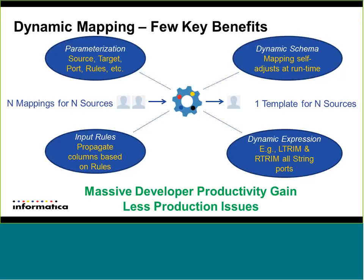Last but not least, we will also be able to parameterize the type of transformations and dynamically adjust the transformations added in the expressions. For example, do you want to trim the string fields? If in one table we get five string fields and in another we get ten string fields, based on the number of string fields coming from the source, that many transformation ports will dynamically be added. This is the beauty of this dynamic mapping functionality — we are not only parameterizing the source and targets, but also the ports, how the ports propagate from source to target, and also the different types of expressions added in the transformation.